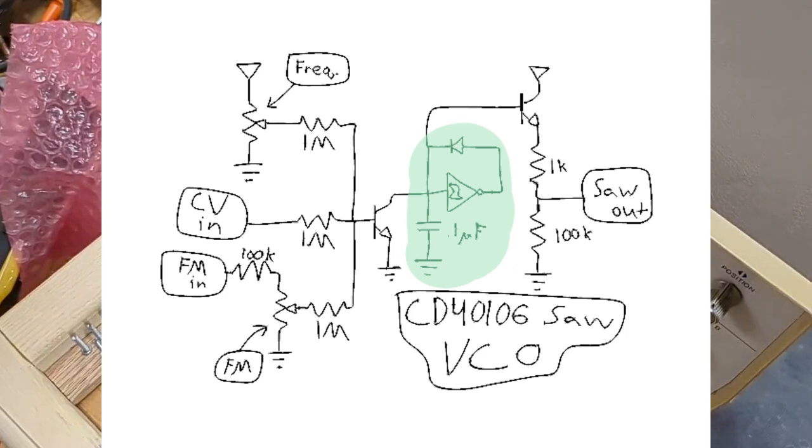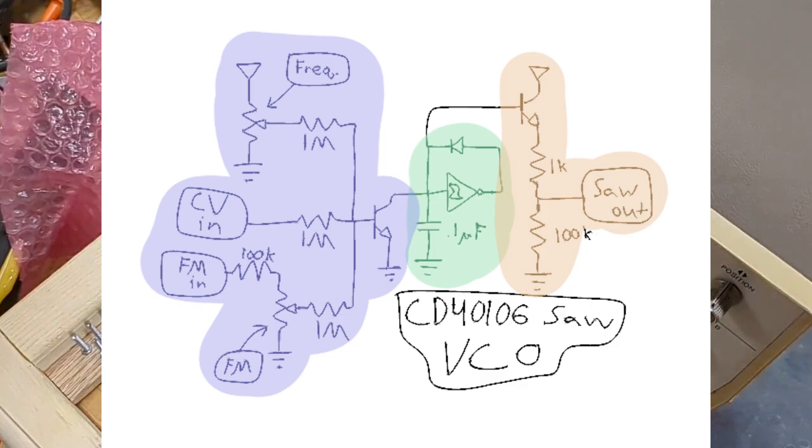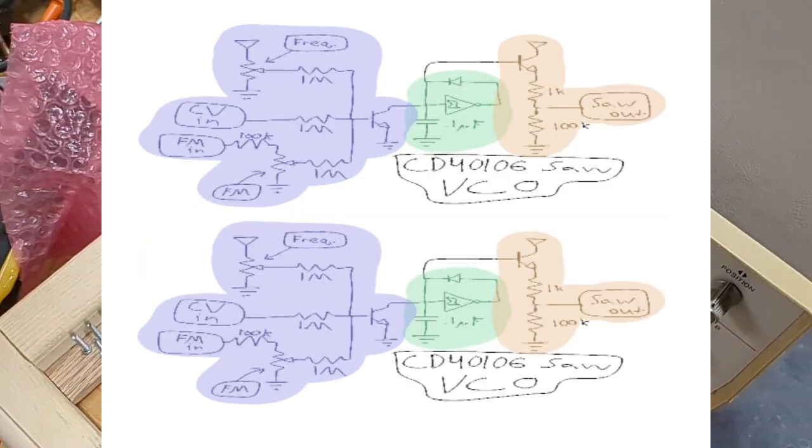And then they're both going into a single transistor buffer and that's the output. You also have an input with a current limiting resistor, one megaohm for every input. And there's two of them.